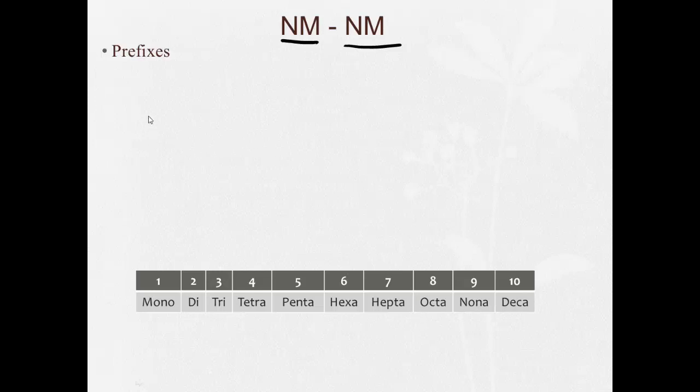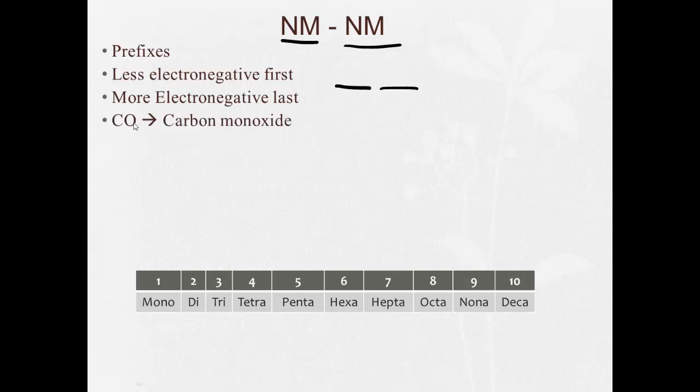Now when we put them in order, the less electronegative element comes first, and the more electronegative element comes last. For example, we have CO. Oxygen's more electronegative, so it's last.